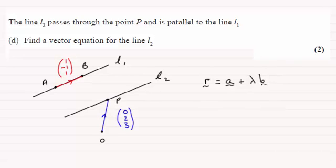Therefore, very easy, we can just say that R equals a point on the line, which we know is (0, 2, 3). So we've got (0, 2, 3).